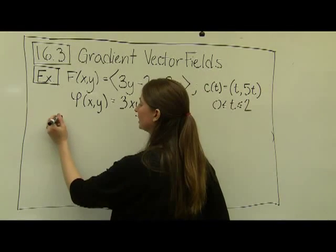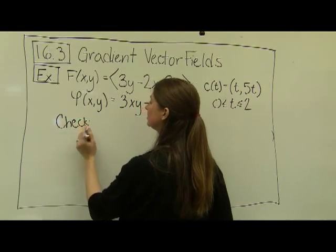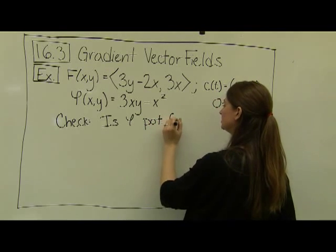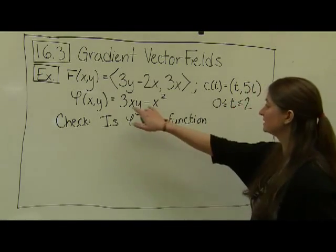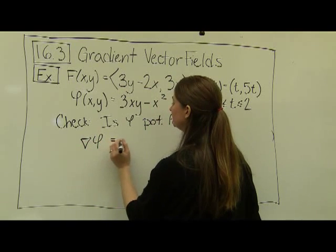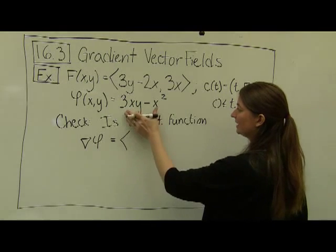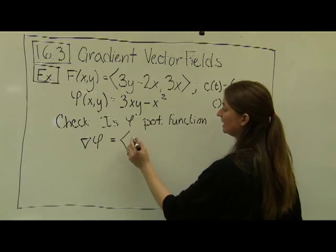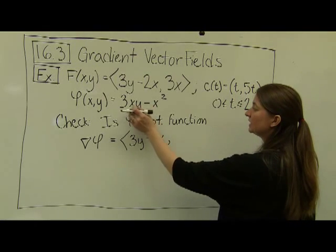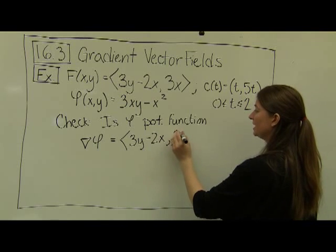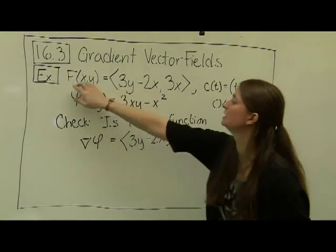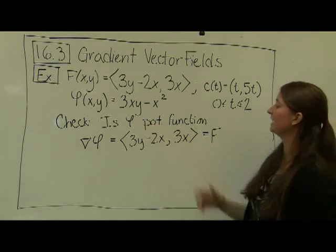The first thing we want to do is check whether phi is actually the potential function. That means the gradient of phi must equal F. Computing the gradient: the partial derivative of phi with respect to x, treating y as a constant, gives 3y − 2x for the first component. The partial with respect to y, treating x as a constant, gives 3x. The gradient of our potential function is exactly equal to F, so phi is indeed a potential function.